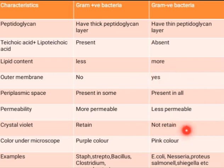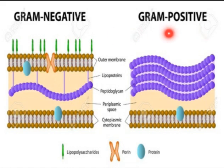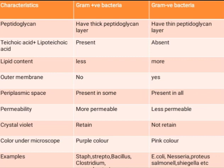Gram positive bacteria are much more permeable compared to gram negative bacteria. Permeability means the ease with which a molecule passes through the membrane. In gram negative bacteria, a molecule must pass through both the outer membrane and the inner membrane, reducing permeability. In gram positive bacteria, there is no outer membrane, so molecules can directly pass the cell membrane, increasing permeability.